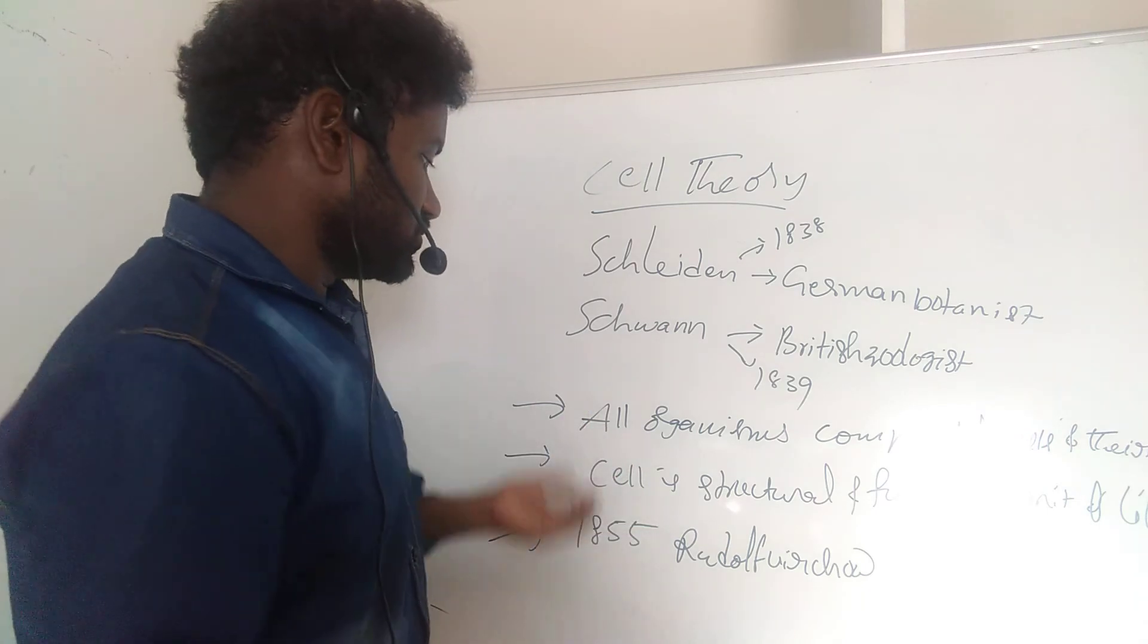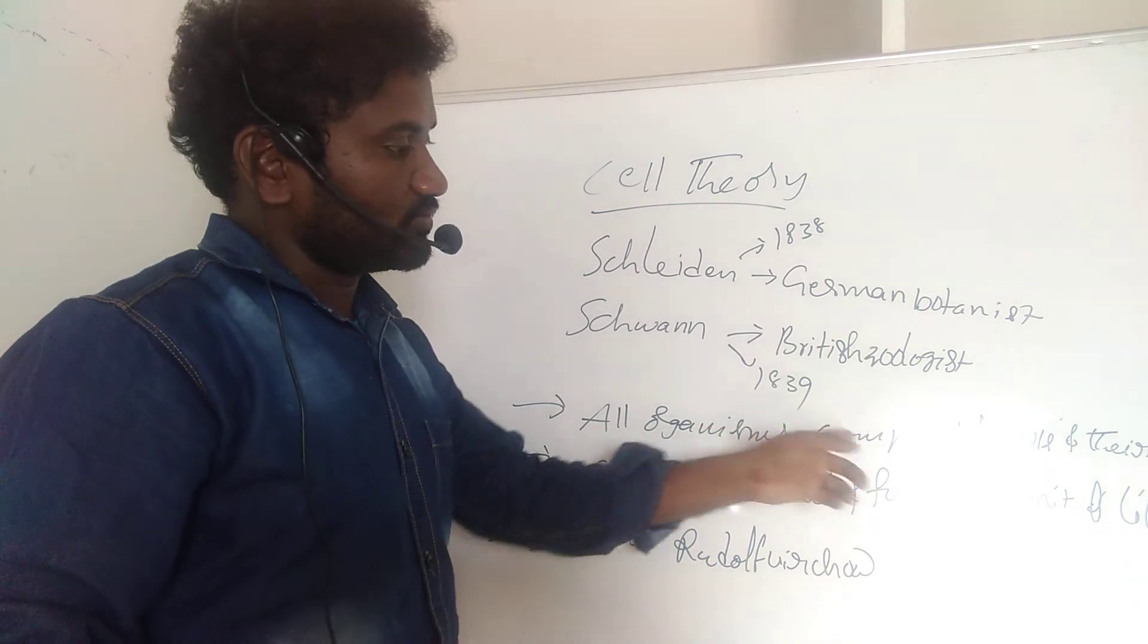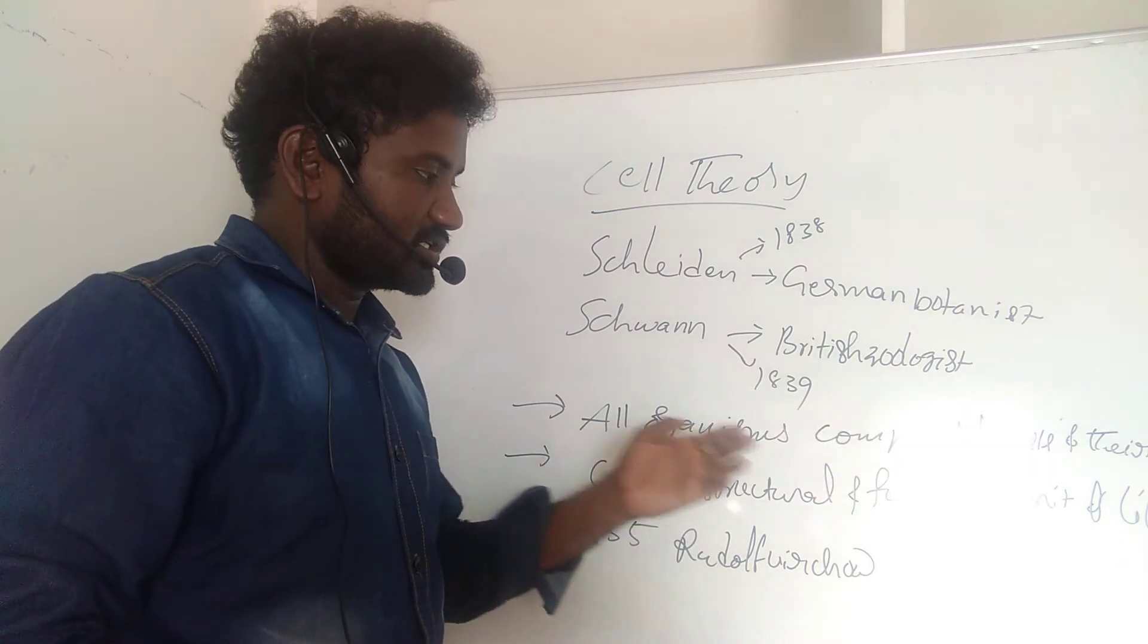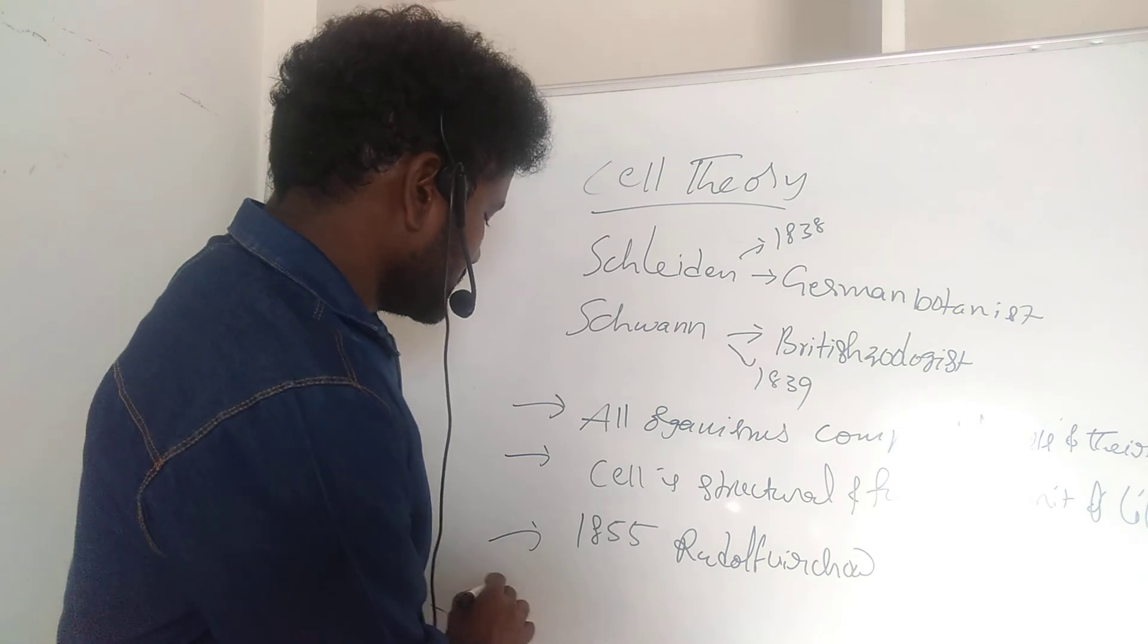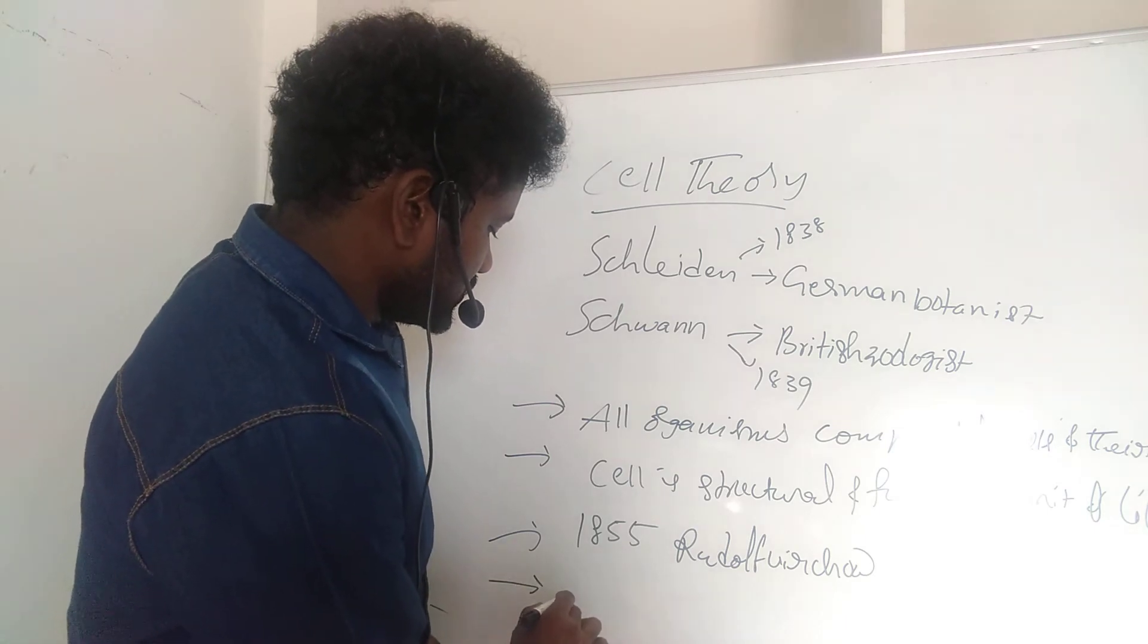According to modern cell theory, all organisms are composed of cells and their products, and the cell is the structural and functional unit.